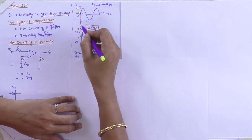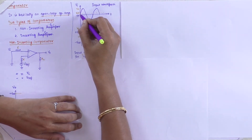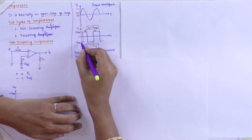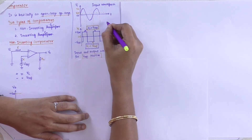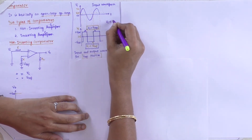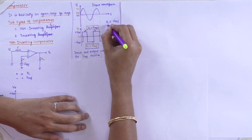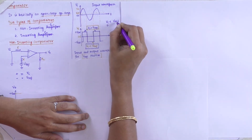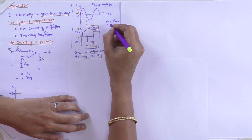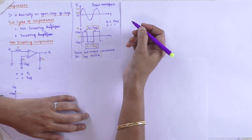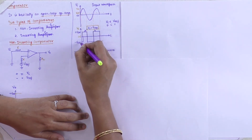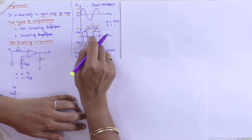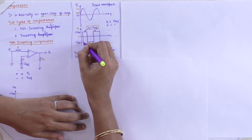Coming to the 0 voltage, here is the V reference voltage. Drawing the waveform, we start with the negative values — in this condition VI is less than V reference. Assuming VI as 0 V and V reference as 1 V, 0 is less than 1. So the output waveform starts with minus V saturation.